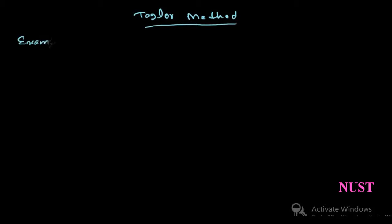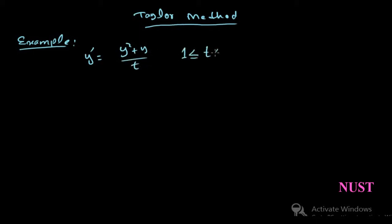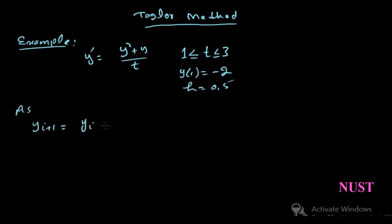These methods are derived from Taylor's theories in one way or another. Considering an example, this is the slope of a function. The range is from 1 to 3 and the initial value at time 1 is minus 2. The interval size is 0.5. We need to find the function value at four different points.